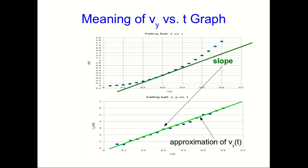If we now draw a best fit line through our data, that's an approximation to the function vy of t. Where what I mean by vy of t is the thing we would have got if we knew the function y of t and took its derivative.